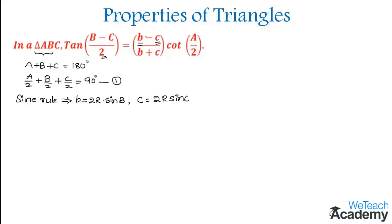Now let us consider the term B minus C divided by B plus C and substitute the values of B and C. We get 2R sine B minus 2R sine C divided by 2R sine B plus 2R sine C.